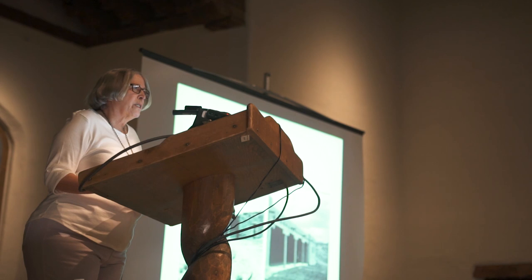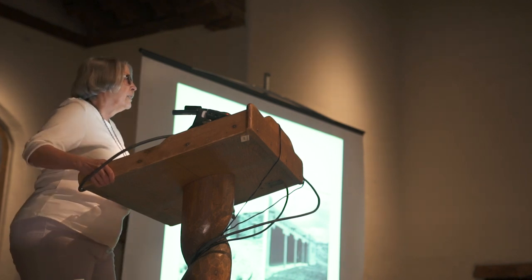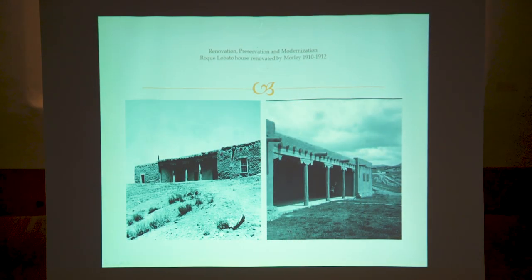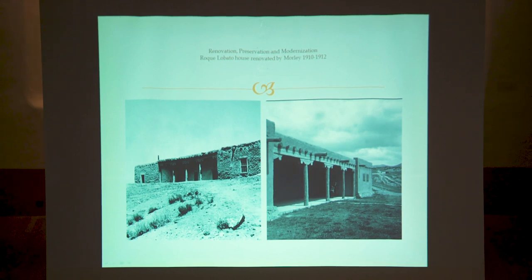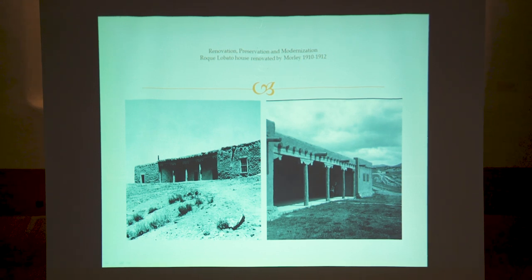Morley was busy as well. He took it upon himself to restore an 18th century structure home, the Roque Lovato home. To quote him: the adaptation of the style to modern living requirements has been accomplished without sacrificing its essential exterior characteristics, and the interior changes introduced have been made chiefly in the direction of 20th century comfort — such as replacing earth floors with wood floors, earth roofs with composition or tin roofs, mica or paper window panes with glass, and no plumbing at all with sanitary plumbing.